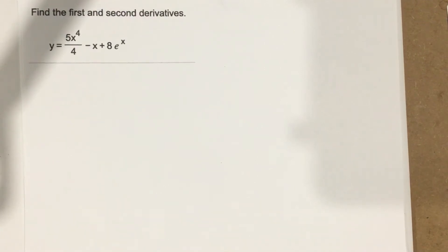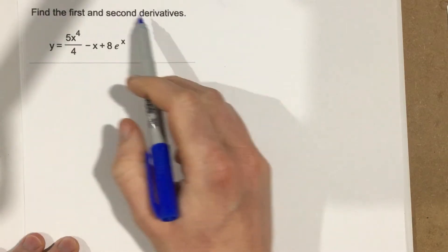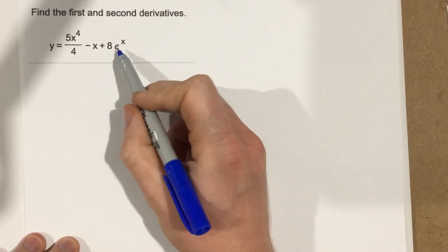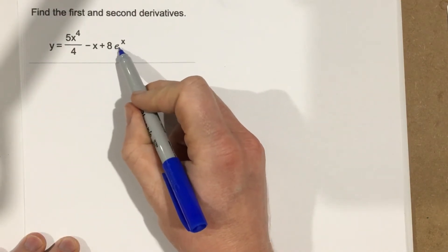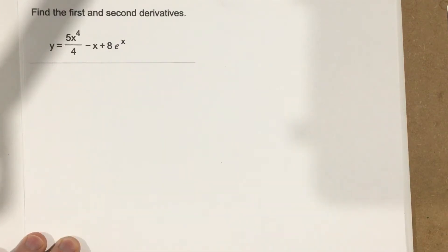This is problem number 2 from section 3.3. In this problem it says find the first and second derivatives. And you'll notice we have the base e to the x power, so we have a little exponential there.